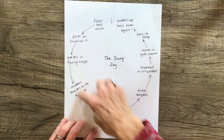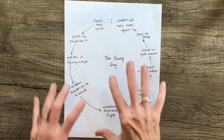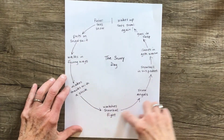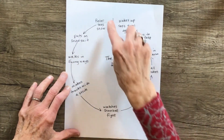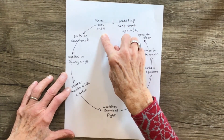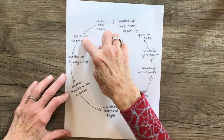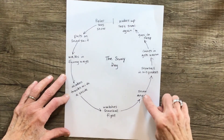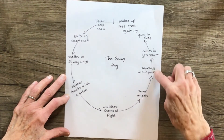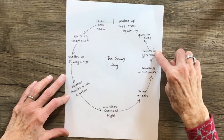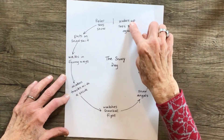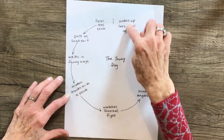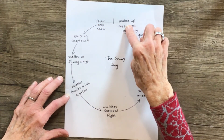Then we're going to look at a version you might decide to use on your own — a version with just pictures and no words. Here's our circle, and you see some words around it. This is the story of Peter — just the main things that happened, going around in a circle. At the top: Peter sees the snow. He puts his snowsuit on. He walks in some funny ways. He makes tracks with a stick. He watches a snowball fight. He builds snow angels and a snowman. He puts a snowball in his pocket, comes in and gets warm, goes to sleep. And then he wakes up and sees the snow again — this is where the circle comes together.